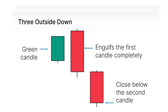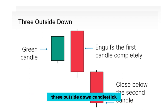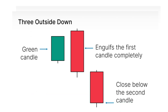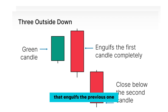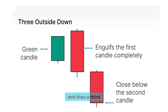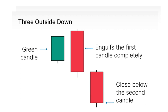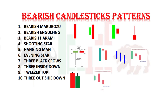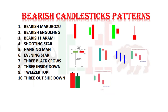Last but not least, we have the three outside down pattern — another bearish reversal pattern consisting of three consecutive candlesticks. It begins with a large bullish candle, followed by a larger bearish candle that engulfs the previous one, and then a third bearish candle that closes even lower. This pattern suggests a strong shift in momentum to the downside.